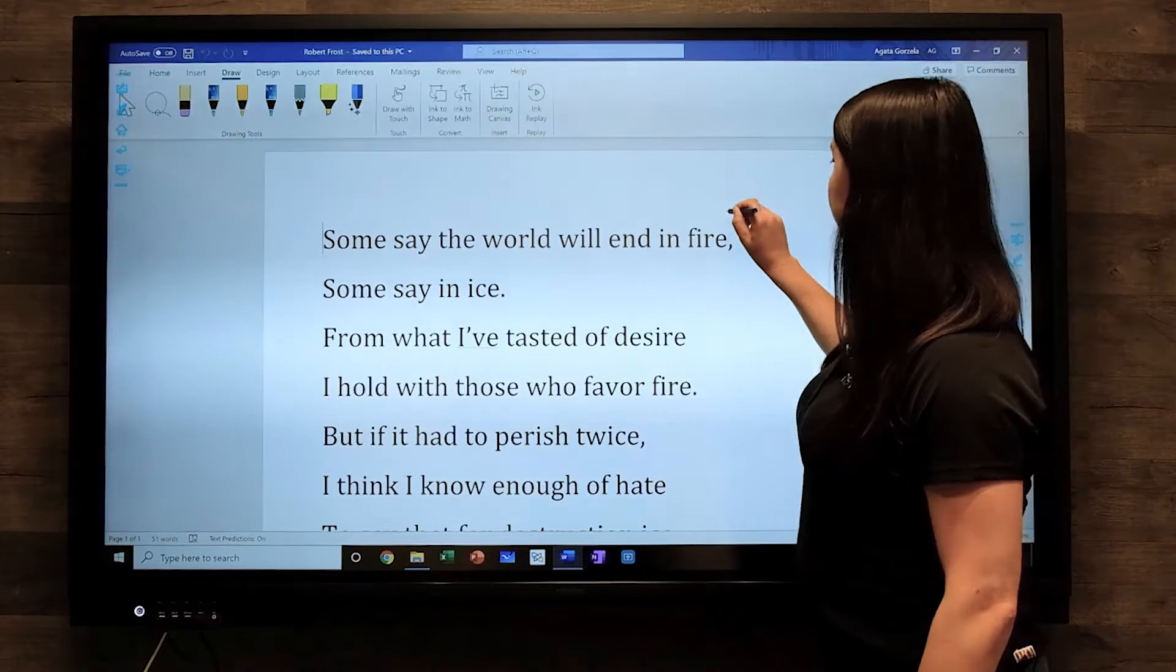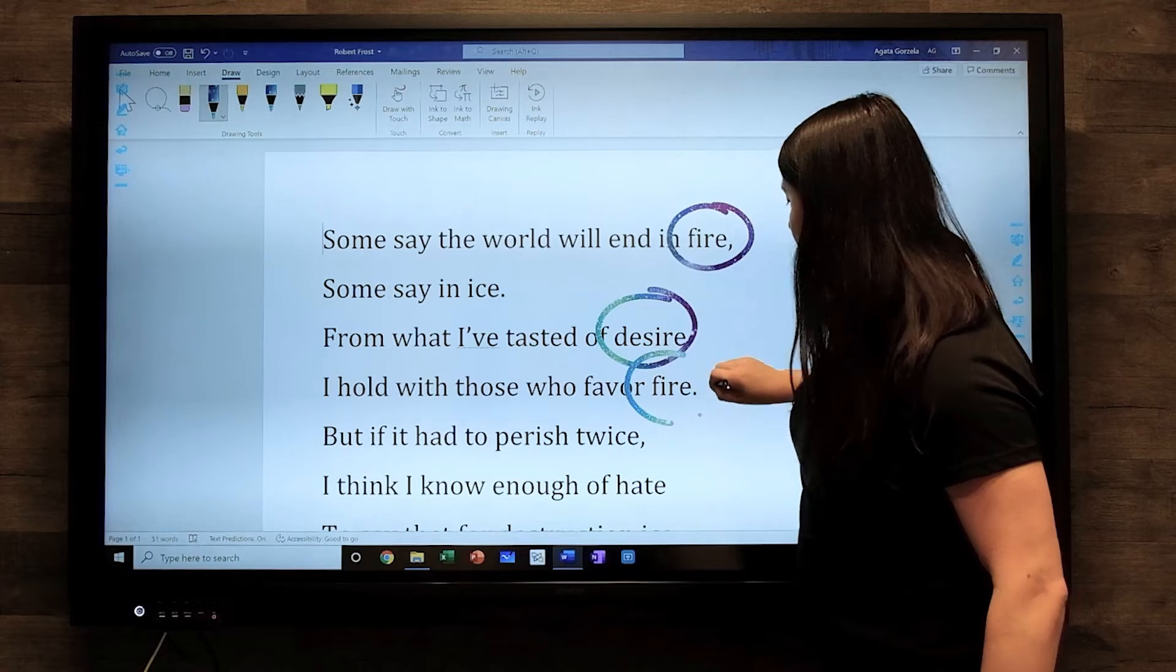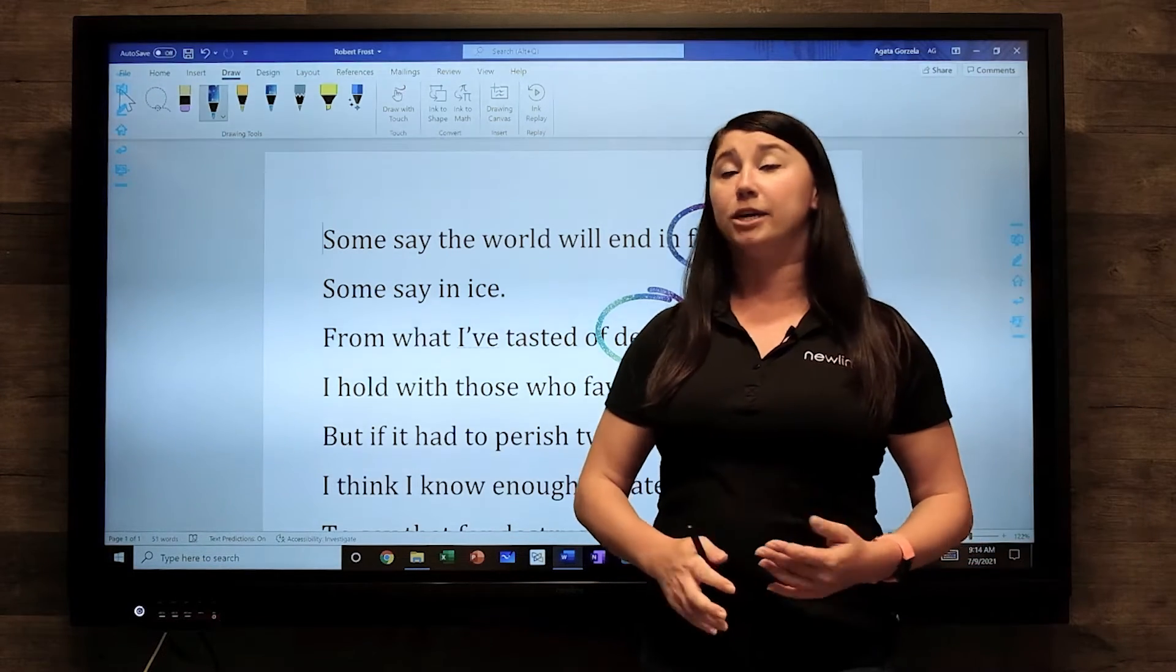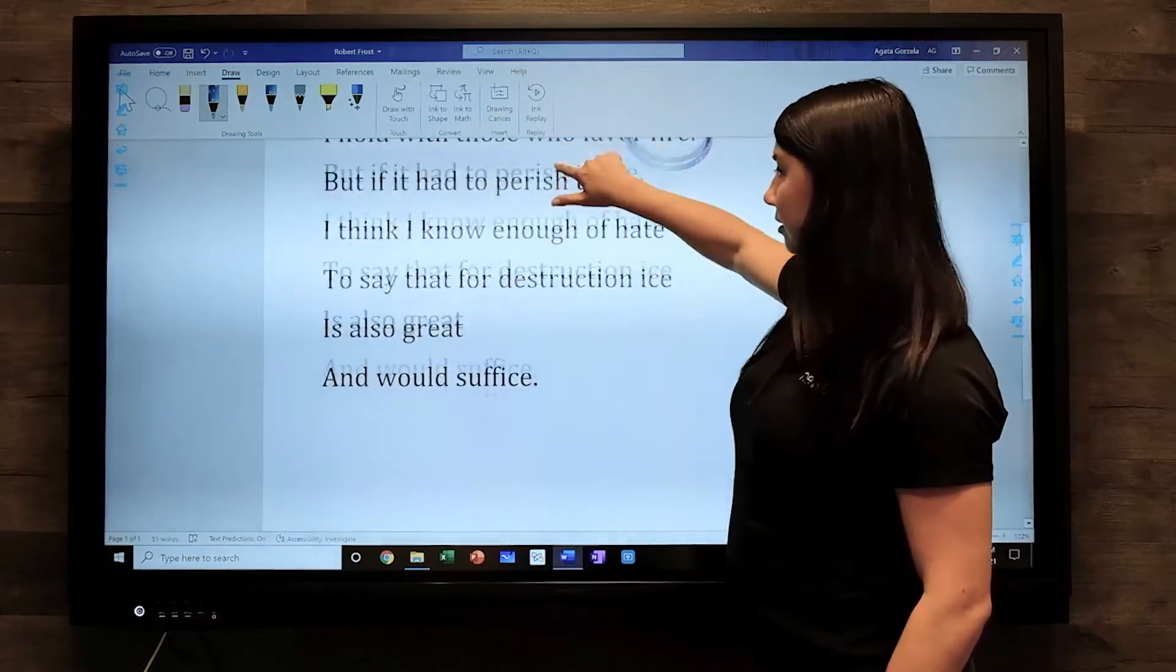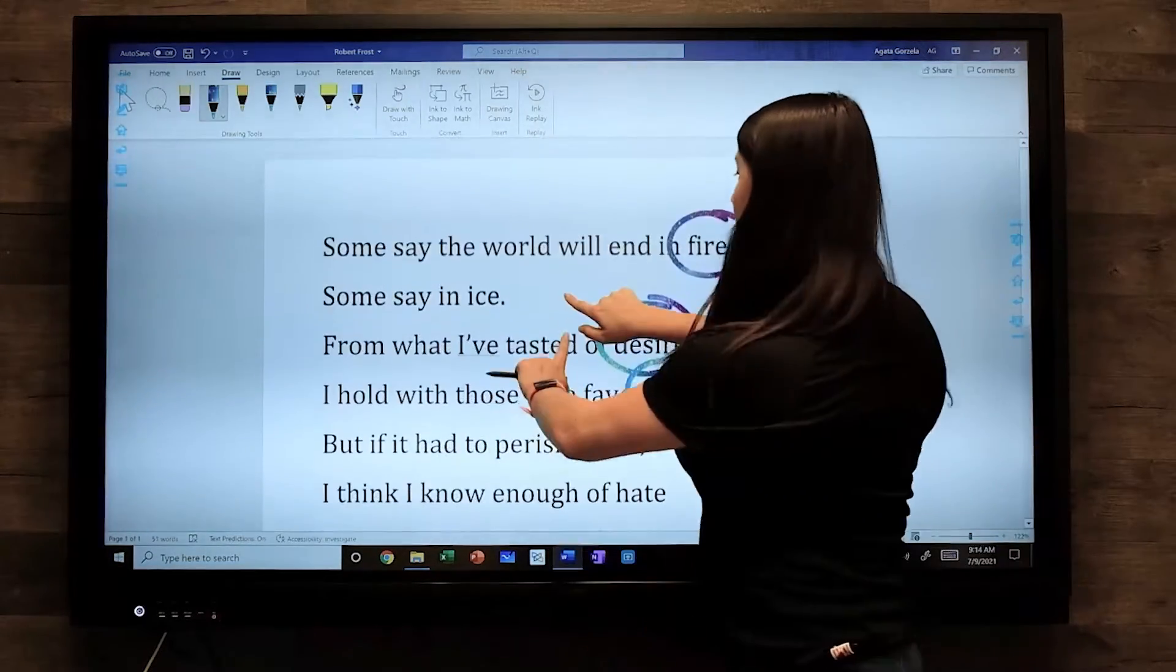If I grab my pen, I can immediately start writing and highlight my words that rhyme. If I use my finger, I can scroll up and down, or I can zoom.